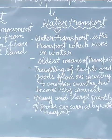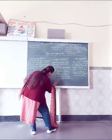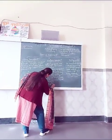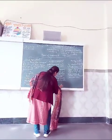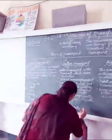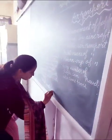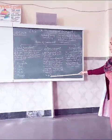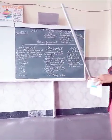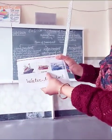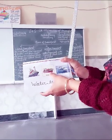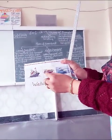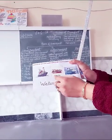Water transport includes ships, boats, and cruise ships. You can see over here examples of water transport: ships, boats, and cargo ships. Cargo ships are used for sending goods from one country to another country when the goods are in large quantity and heavy.